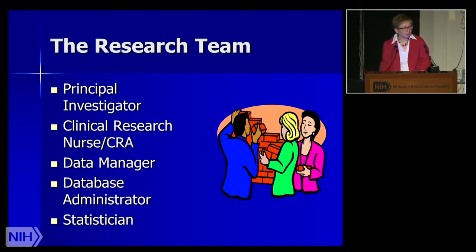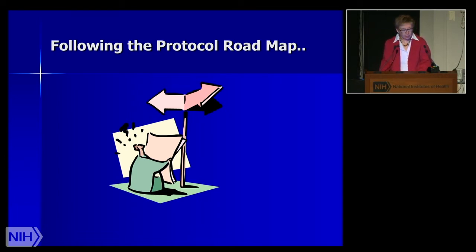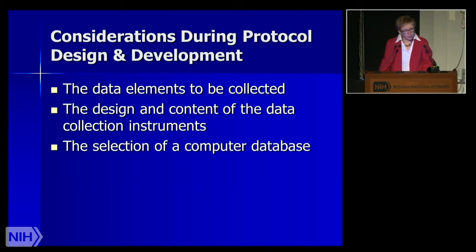In order to do that, training is essential. The protocol is often considered a roadmap — it's a document that includes information about why the study is being done, the hypothesis behind it, the aims, and how the study will be conducted to meet those aims. The protocol should contain sufficient detail so that there is uniformity in the selection and treatment of patients and uniform data collection and submission. Things to consider when developing the protocol include what data elements you're going to collect, the design and content of the data collection instruments, and what type of computer database you'll be utilizing.